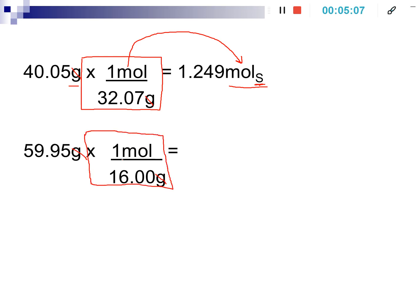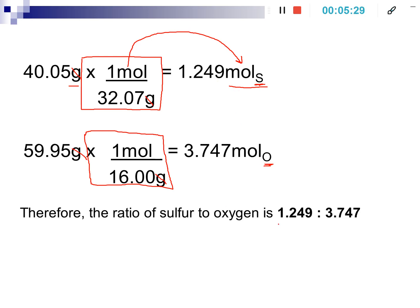Don't just do this on your calculator — write it out, set up the conversion factor, cancel out the units. For oxygen, we have 59.95 grams with a molar mass of 16 grams per mole. Set up your conversion factor, put grams on the bottom to cancel out, and moles follows through. Label the units — this is sulfur, this is oxygen — so you won't confuse your quantities. That gives us the mole ratio between sulfur and oxygen: 1.249 to 3.747. However, that is not a whole number.